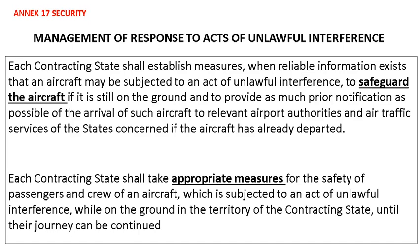Management of response to acts of unlawful interference: each contracting state shall establish measures when reliable information exists that an aircraft may be subject to an act of unlawful interference — to safeguard the aircraft if it is still on the ground, and to provide as much prior notification as possible of the arrival of such aircraft to relevant airport authorities and air traffic services if the aircraft has already departed. Each contracting state shall take appropriate measures for the safety of passengers and crew of an aircraft subjected to an act of unlawful interference while on the ground in the territory of that state.